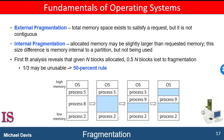Memory fragmentation can be internal as well as external. Consider a multiple partition allocation scheme with a block of 18,464 bytes — suppose the next process requests 18,462 bytes. If we allocate exactly the requested block, we are left with a block of 2 bytes, and the overhead to keep track of this block will be larger than the block itself. The general approach to avoiding this problem is to break physical memory into fixed-size blocks and allocate memory in units based upon block size. With this approach, the memory allocated to a process may be slightly larger than the requested memory; the difference between these two numbers is internal fragmentation — unused memory that is internal to a partition. We will still have some degree of fragmentation, but it should generally be smaller.